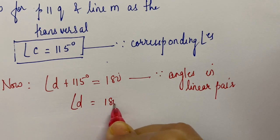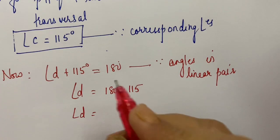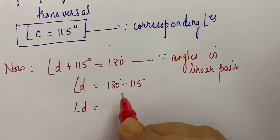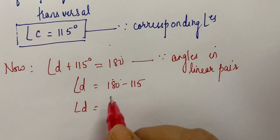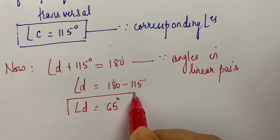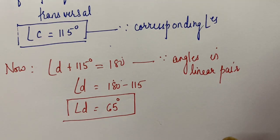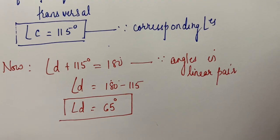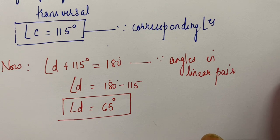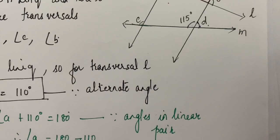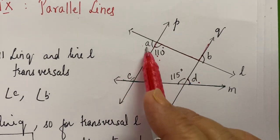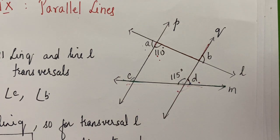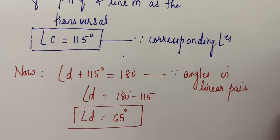So angle D will be equal to 180° minus 115°, which gives angle D equal to 65 degrees. Actually, angle D and angle A are not exterior alternate angles — exterior alternate angles would be different ones. So you will have to go for angles in a linear pair only. Please keep that in mind. We got the measure of angle D as 65 degrees.